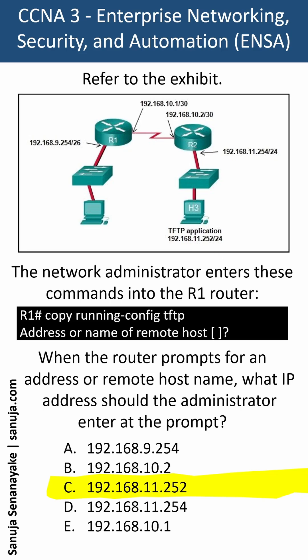A TFTP server is an application that can run on a multitude of networking devices including routers, servers, or even network-connected PCs, and provides services to the network. In this particular configuration, because we are running copy running-config tftp, the address it is asking for is the TFTP application IP address, and therefore the answer is C.